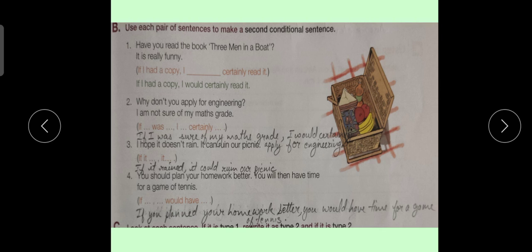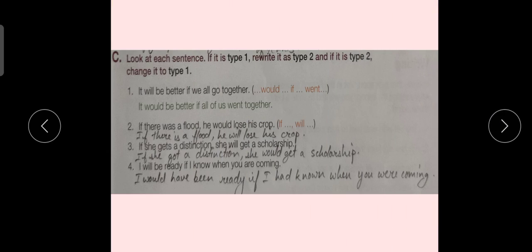Now let's move on to exercise C. Look at each sentence. If it is type 1, rewrite it as type 2. And if it is type 2, change it to type 1. Sentence number 1. It will be better if we all go together. Dash would if went. It would be better if all of us went together.